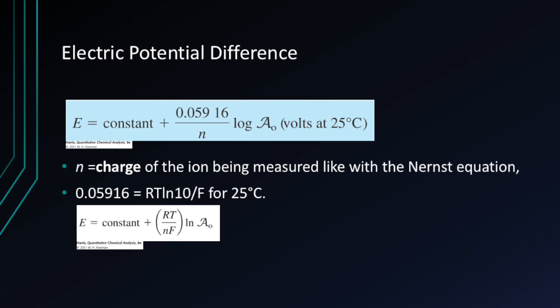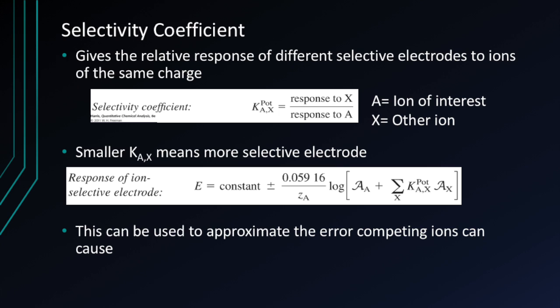To calculate the electric potential difference for ion-selective electrodes, the Nernst equation is used, but here n is the charge of the ion being measured rather than the number of electrons transferred in a redox reaction. The selectivity coefficient gives the relative response of different selective electrodes to ions of the same charge; it is calculated by dividing the response to X (the interfering ion) by the response to A (the ion of interest). A smaller selectivity coefficient means a more selective electrode. From this, the approximate error from competing ions can also be calculated.